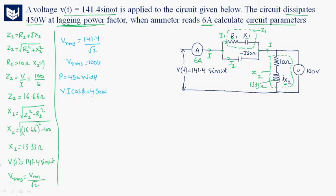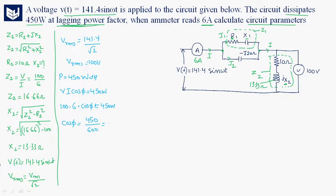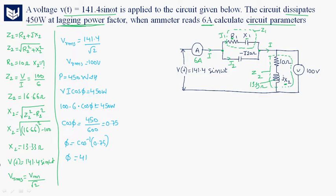Power = V·I·cos φ = 450 watts. With V = 100 and I = 6, we get cos φ = 450 / (100 × 6) = 450/600 = 0.75. Therefore φ = cos⁻¹(0.75) = 41.4 degrees. Since the power factor is lagging, this is a lagging power factor angle.